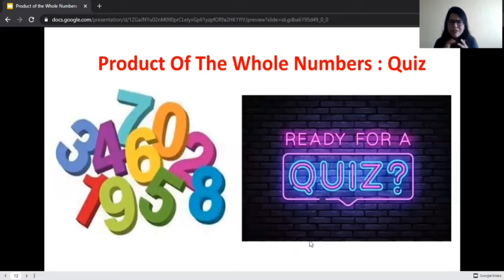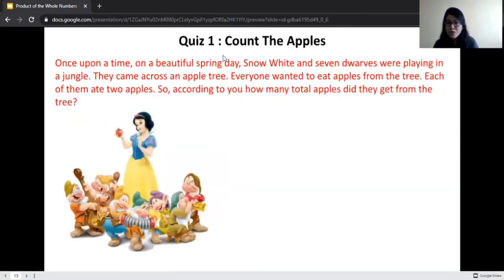Now we are going to have some fun with the products of the whole number. Let's play a quiz. Here is a quiz about Snow White and her Seven Dwarfs. The name of the first quiz is Count the Apples. Once upon a time on a very beautiful spring day, Snow White and her Seven Dwarfs were playing in the jungle. By playing they came across an apple tree. Obviously everyone wanted to eat the apples from the tree. Each of them ate two apples.